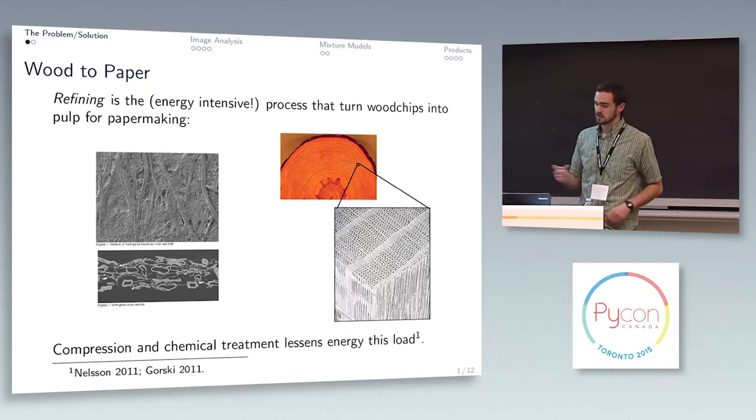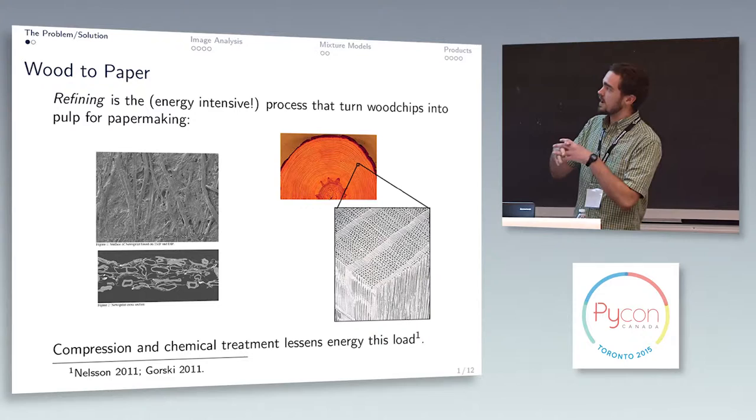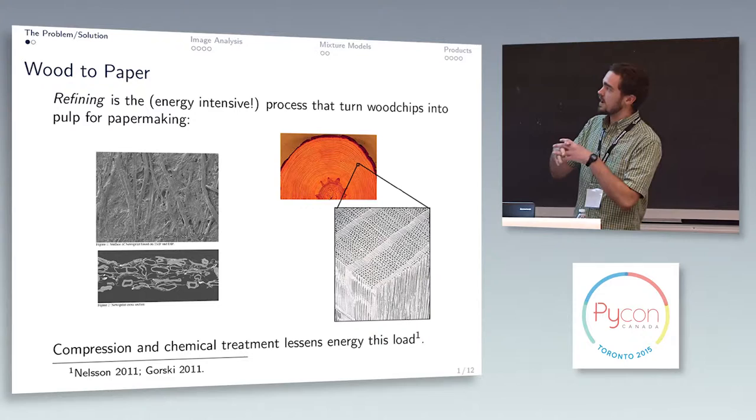That's what newsprint looks like really close up in a cross-sectional view, so you get all these hollow fibers overlapping and intermingling and you make paper. It takes a lot of energy, something like 10% of BC's electricity.